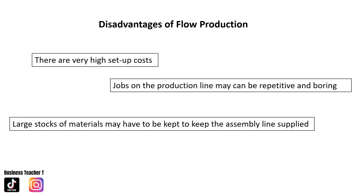Disadvantages of flow production: there are very high set-up costs as the required technology is very costly. Jobs on the production line may become repetitive and boring for workers, leading to demotivation and potentially a high labour turnover. Large stocks of materials may also have to be kept to supply the assembly line, which can be expensive.